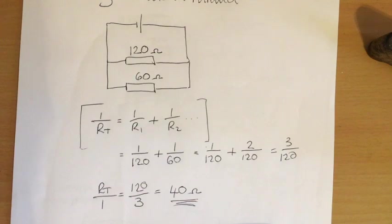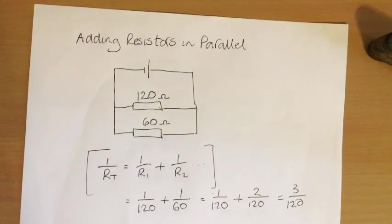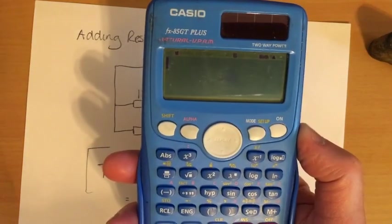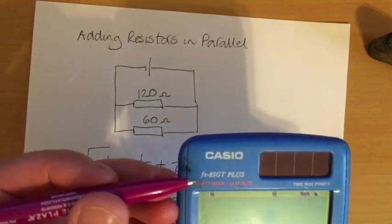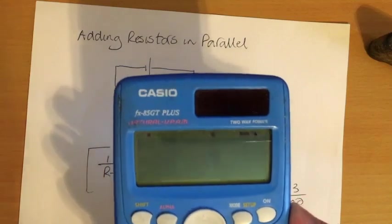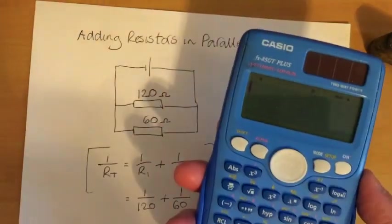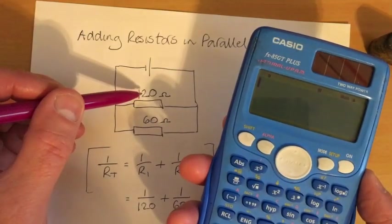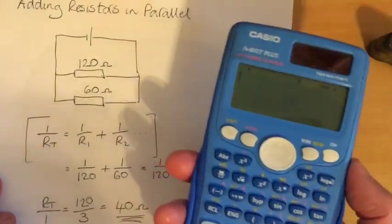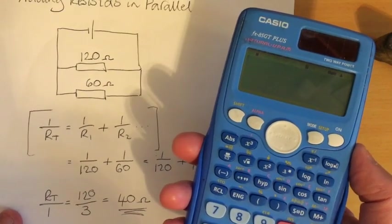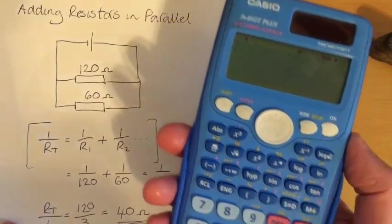Is there an easier way to do it? If you don't like fractions? Yes, there is. You use your calculator. Your calculator, Casio FX 83 or 85 if you can get one. Your calculator does it for you. You need to know the buttons though. What's our two resistors? 120 and 60. So we want to do this sum, but do it quickly on our calculator.